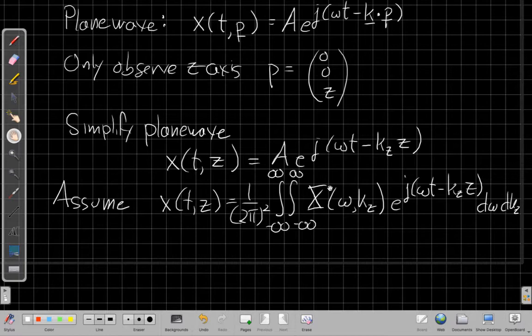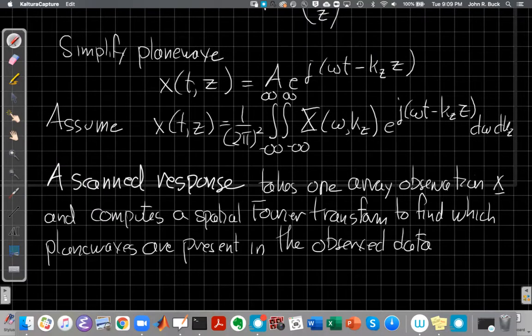So this is like a more general version of a scanned response. So just because it's good to review, I want you to pause the video for a second here, and try to remind yourself in one sentence what is a scanned response. A scanned response for a narrowband signal, like we've seen this semester, takes one array observation vector x, so the vector of complex phasors representing the signal at that narrowband frequency, and then we compute a spatial Fourier transform to find which plane waves are present in the observed data.